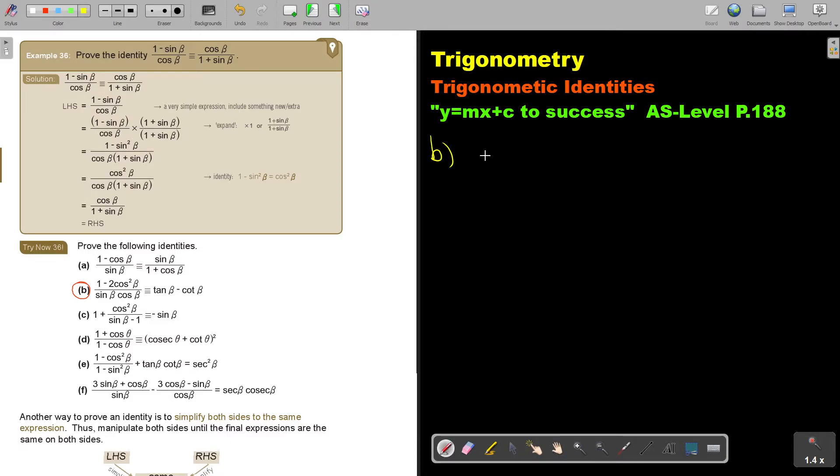So this was 1 minus 2 cos squared beta over sin beta cos beta. And the identity is tan beta minus cot beta.